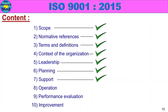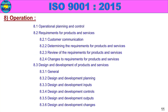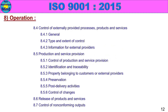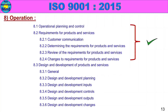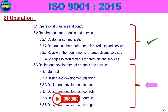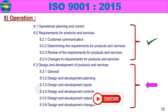ISO 9001-2015 Class 8 is Operation, covering 8.1 through 8.7 classes. The content also includes 8.3 Design and Development of Products and Services and its subclasses.